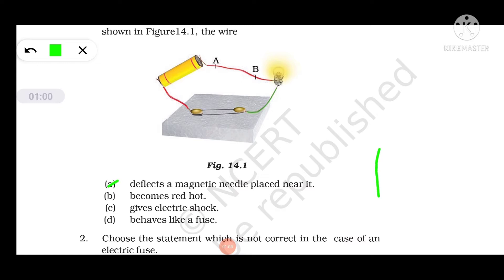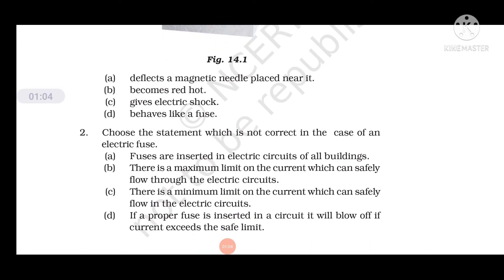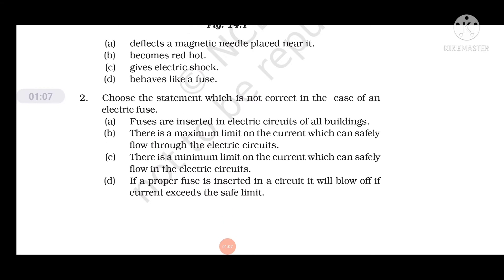Question number 2: Choose the statement which is not correct in case of an electric fuse. Option 1: Fuses are inserted in electric circuits of all buildings - this is absolutely correct. There is a maximum limit on the current which can safely flow through electric circuits - this is also correct. There is a minimum limit on the current which can safely flow in the electric circuit - this is wrong because there is a maximum limit on the current which can safely flow. So this statement is wrong. And if a proper fuse is inserted in a circuit, it will blow off if current exceeds the safe limit - this is also correct.